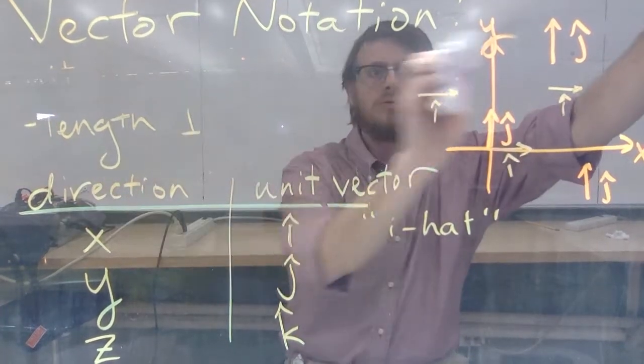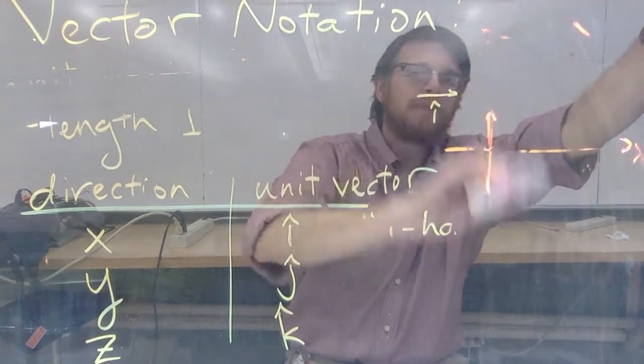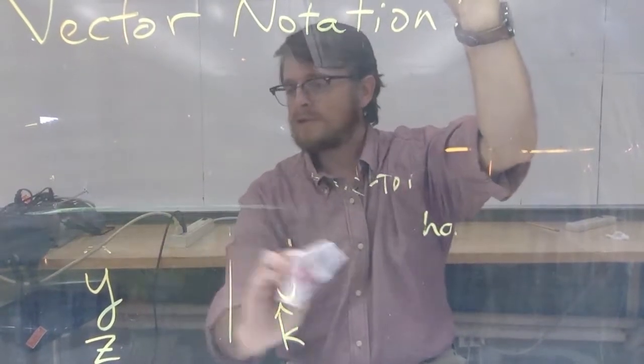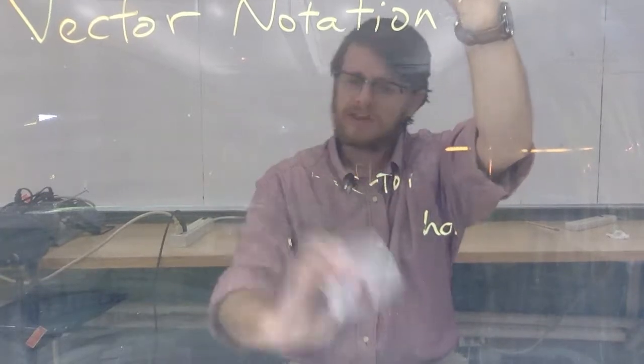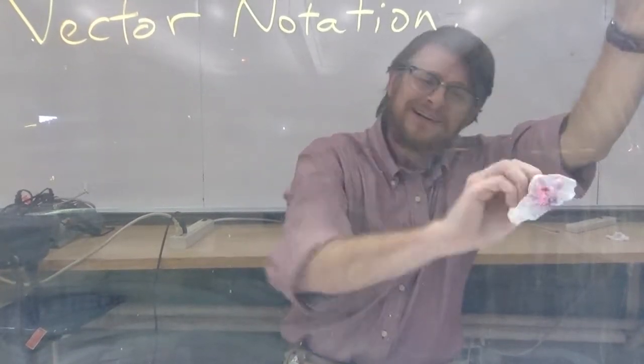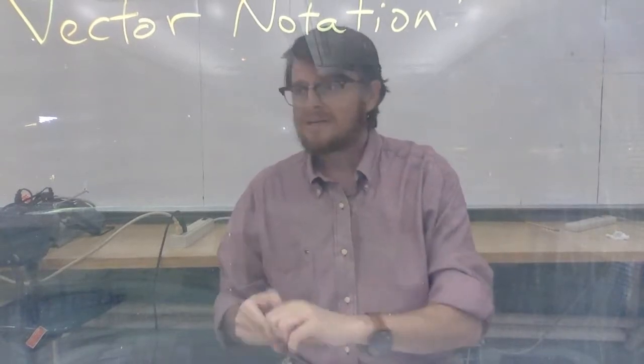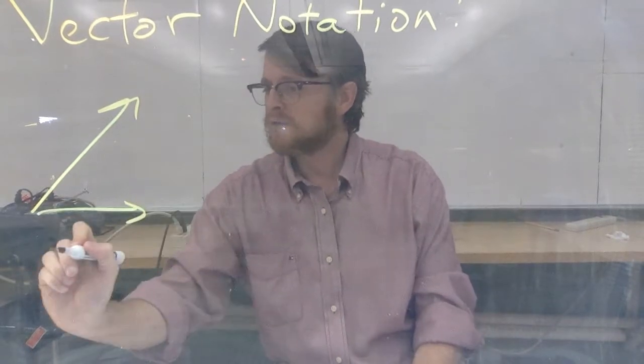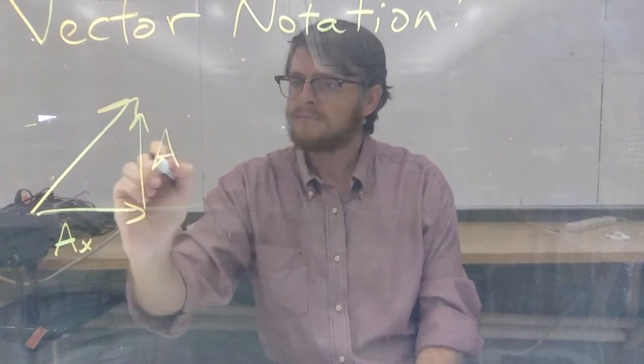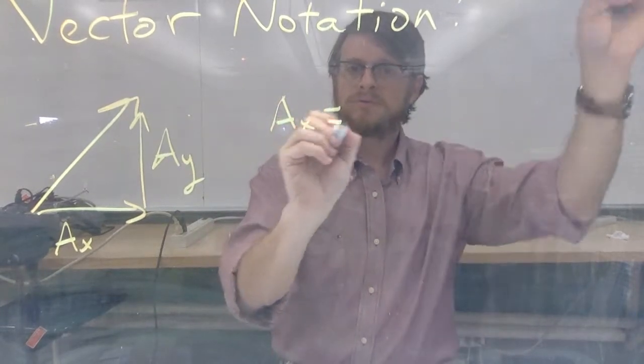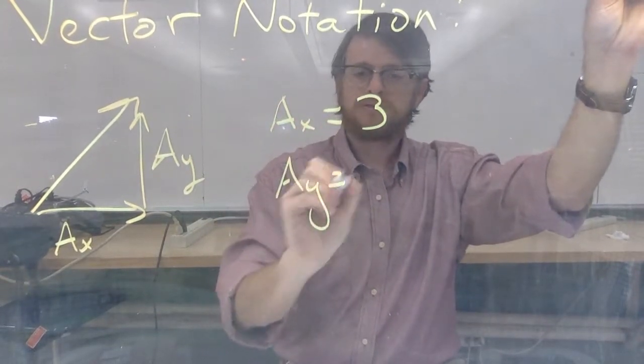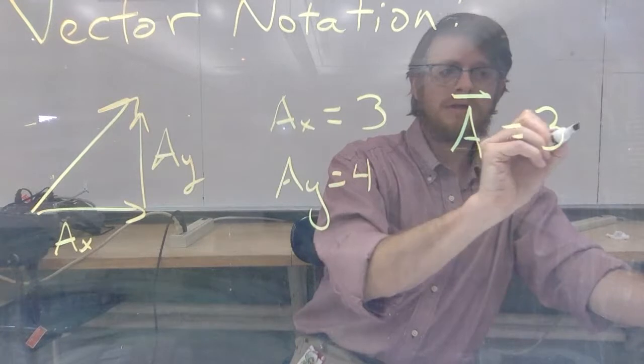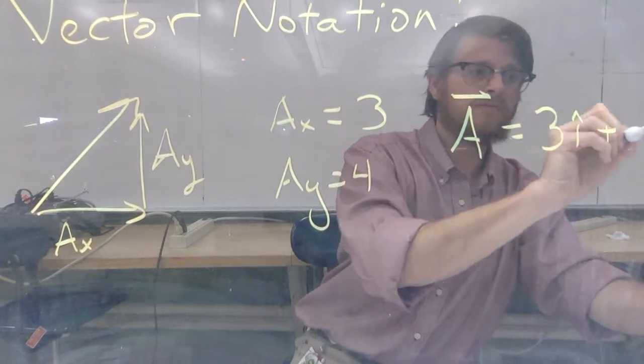So if I go back to my ways of drawing or depicting a vector and I go back to my vector a. Remember, vector a had an x component of 3 or 4, I think. No, an x component of 3 and a y component of 4. One of those. You will have access to that information. So we could draw it like this and we can write a x and a y. We could say a x equals 3, a y equals 4. But now we can also write a equals 3 i-hat plus 4 j-hat.